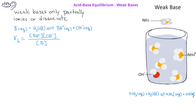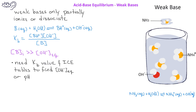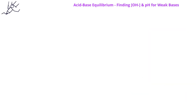Because weak bases only partially ionize, the equilibrium concentration of the hydroxide ion is going to be much less than the initial concentration of the base. Therefore, in order to find the pH of a weak base solution, we will need the value of the base ionization constant as well as ICE tables to find the equilibrium concentration of the hydroxide ion. Let's look at an example for finding the hydroxide ion concentration and the pH of a weak base solution.